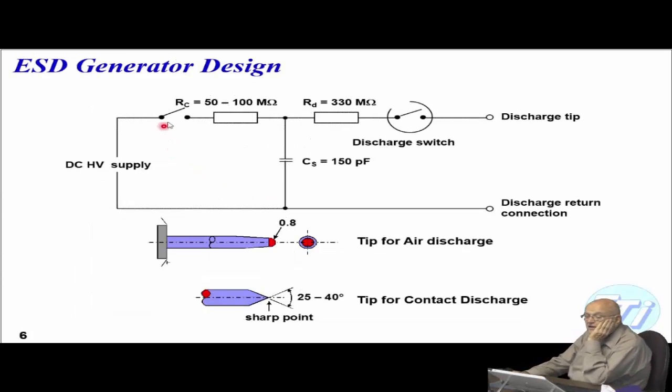So let's take a look at an ESD generator design. Here's our DC voltage supply. This right here is actually charged. What will happen is that this particular capacitor will charge up, close this. And then we have a discharge switch. That capacitor then will discharge through this effectively resistance into that unit.